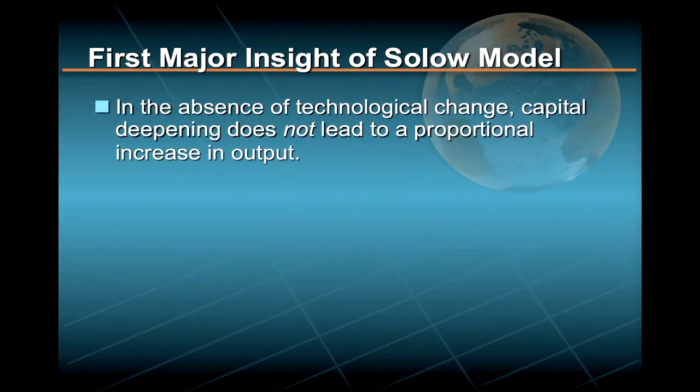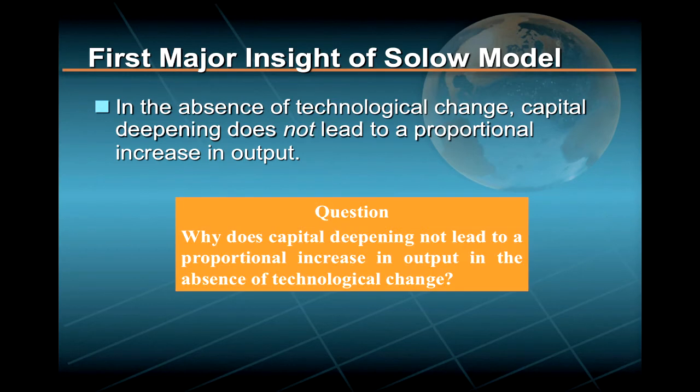The first major insight of the model is that, in the absence of technological change, capital deepening does not lead to a proportional increase in output. Can you think of a reason why this might be true?